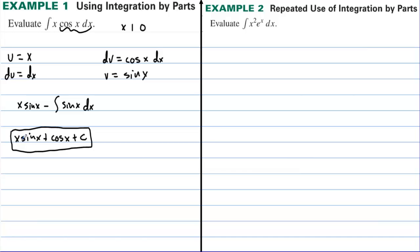To verify the answer is correct, we take the derivative using the product rule: first times derivative of second plus second times derivative of first. The derivative of cosine is negative sine of x, and the derivative of the constant is zero. Sine of x cancels and we get right back to where we started.